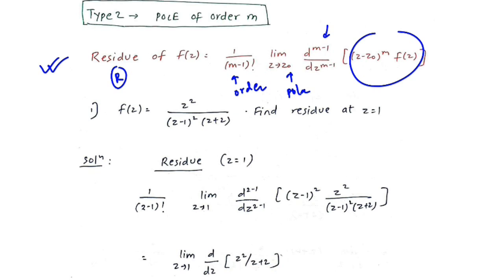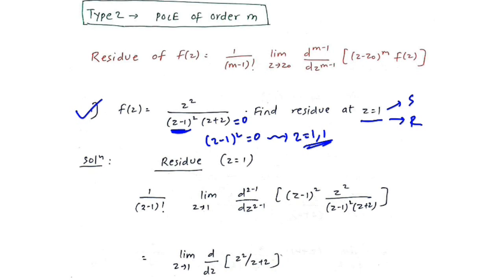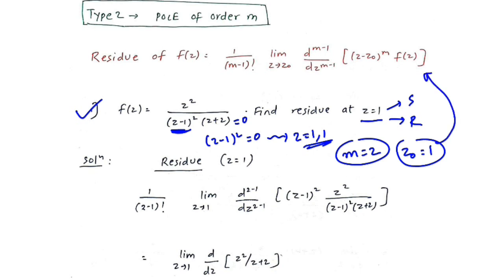Example 1 for repeated pole: f of z equals z-squared upon (z minus 1) squared into (z plus 2). Find the residue at z equals 1. Putting the denominator equal to 0, (z minus 1) squared gives z equals 1, 1 — repeated twice — so the order is 2, meaning m equals 2 and z-naught equals 1. Substitute these into the repeated pole formula.